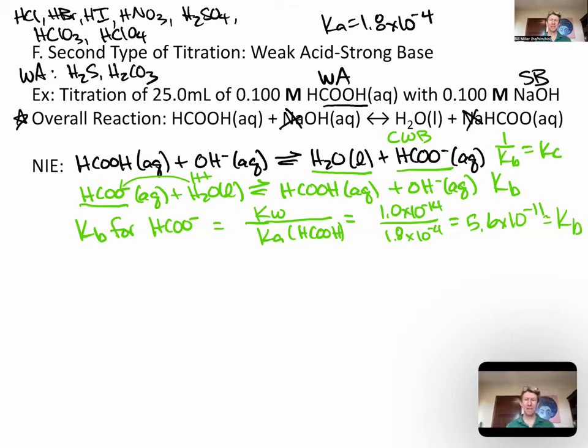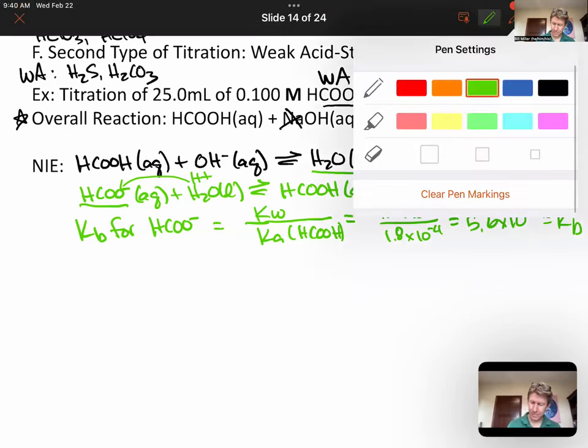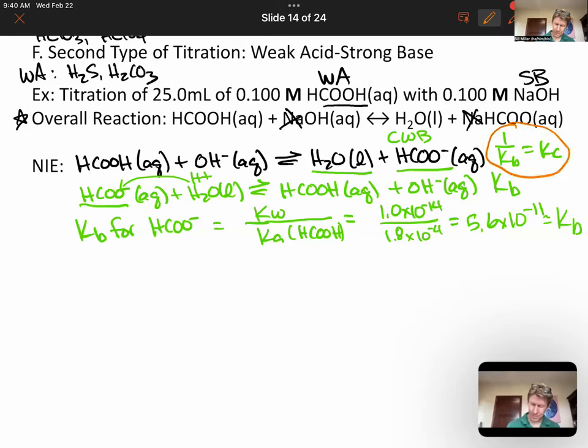I get 5.6 times 10 to the minus 11. That's going to be our Kb value for formate. It's a weak base because its Kb value is between 0.1 and 10 to the minus 14. And then Kc equals 1 over that number. I get 1.8 times 10 to the plus 10. So this reaction has a K value of 1.8 times 10 to the plus 10, which means this reaction goes to completion.